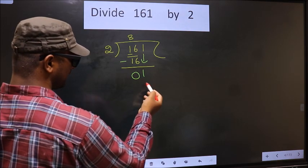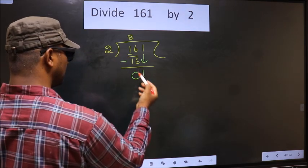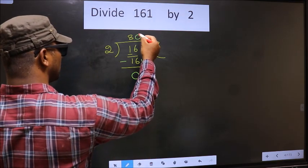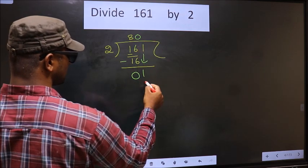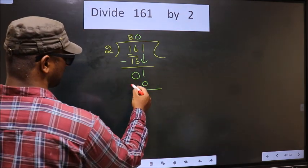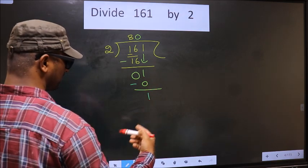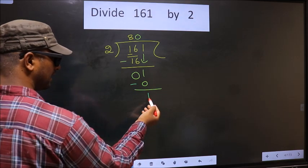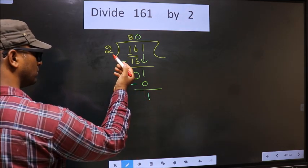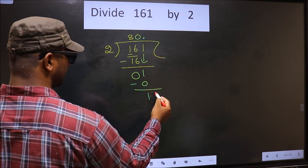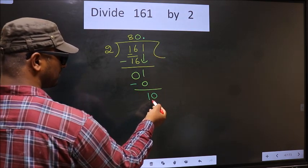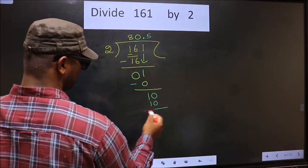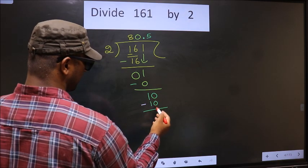Instead, think: what number should we write here? If we write 2, that will be larger than 1, so we take 0. 2 times 0 is 0. Now subtract: 1 minus 0 is 1. We did not bring any number down here, and 1 is still smaller than 2 — so now you can put a dot and take a 0. Now we have 10. When do we get 10 in the 2-times table? 2 fives are 10. Subtract: 10 minus 10 equals 0.